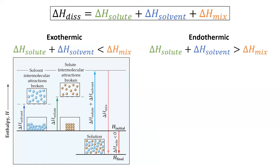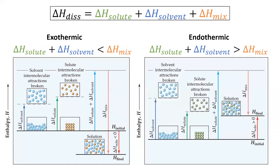In other words, the amount of energy we get out from mixing the two substances together is greater than the amount of energy we had to put in to break apart the solute-solute and solvent-solvent interactions. If the enthalpy of mixing is smaller than the two endothermic steps, then the overall process is endothermic, as shown in this image — the process of mixing doesn't give back enough energy to pay for the two endothermic steps.